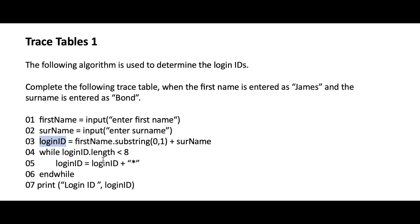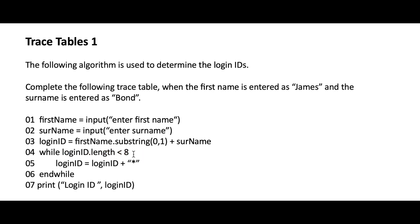We then have a conditional loop: while login ID dot length is less than eight, we run line five, which assigns login ID the value of login ID concatenated with an asterisk — in other words, adds an asterisk to the end of the login ID string. This repeats until the while loop is false. Once false, the string literal 'login ID' is printed followed by the contents of the variable login ID.